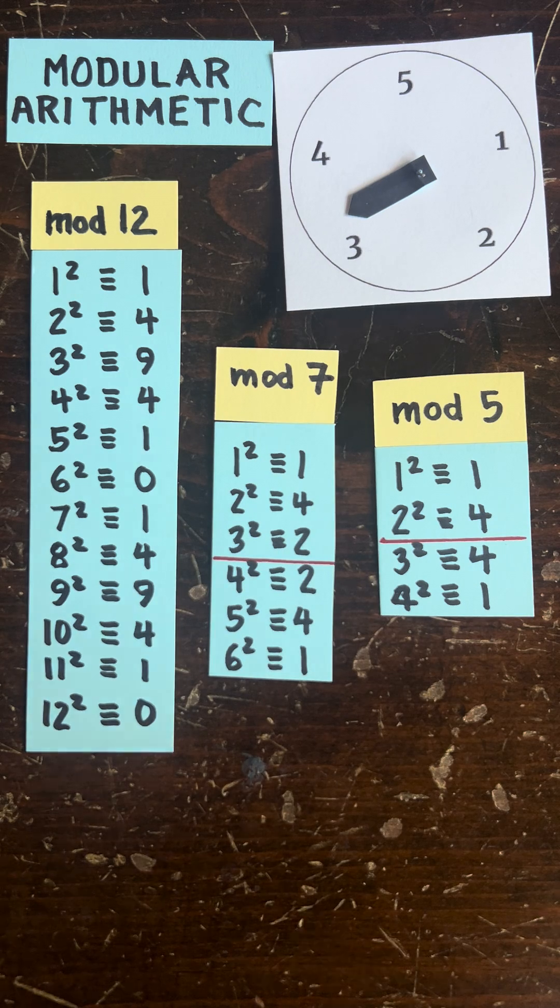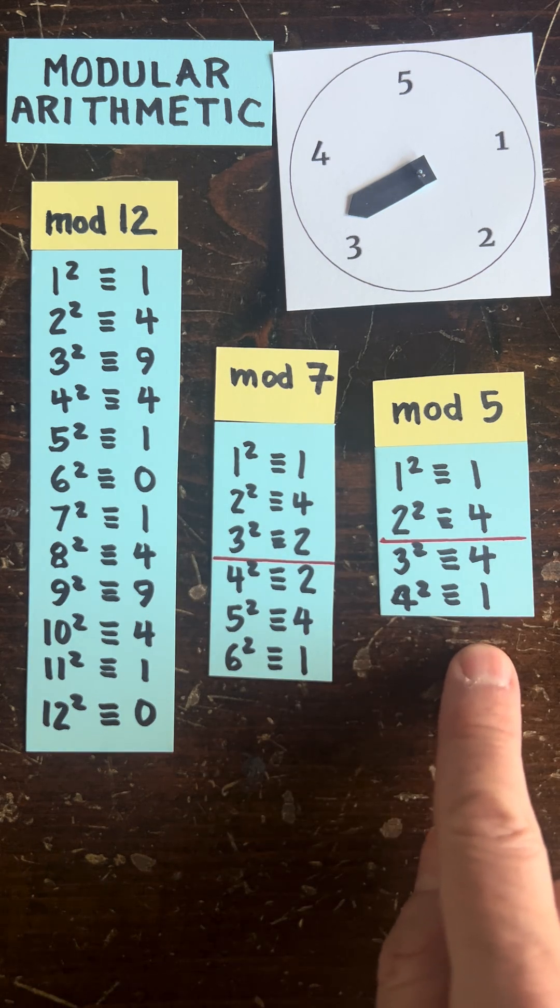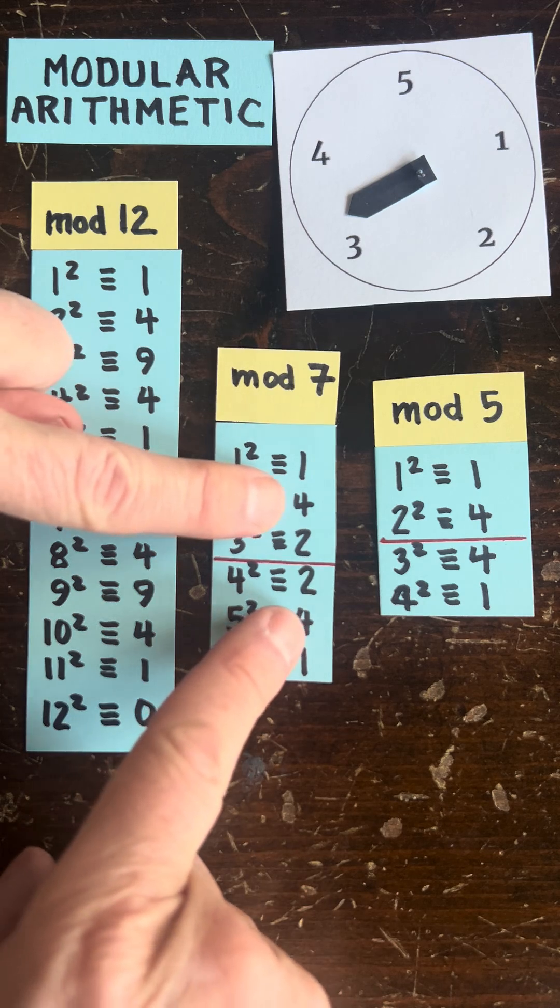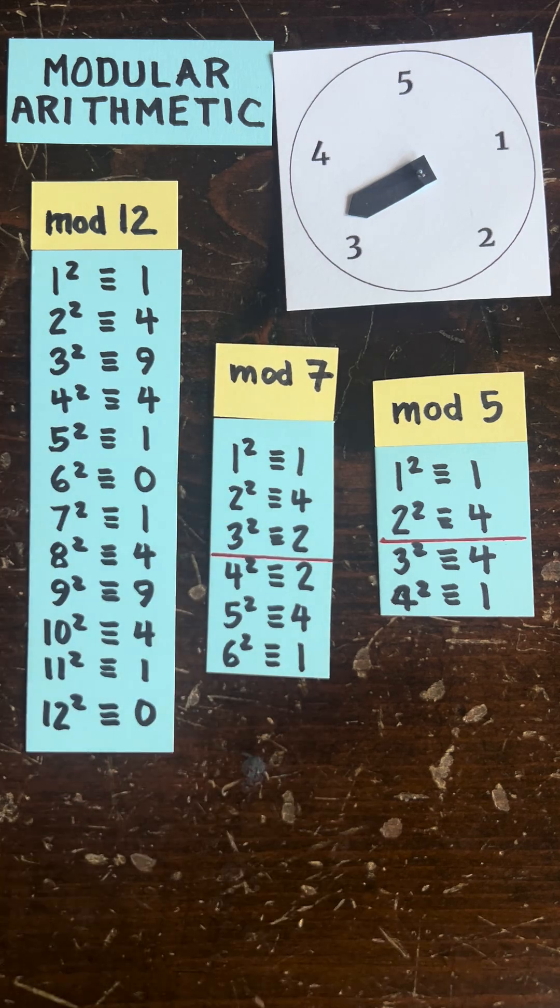So for example, on a 5-hour clock, the squares are 1, 4, 4, 1, and on a 7-hour clock, it's 1, 4, 2, 2, 4, 1. And these subsequences are mirrors of each other, and that's no coincidence.